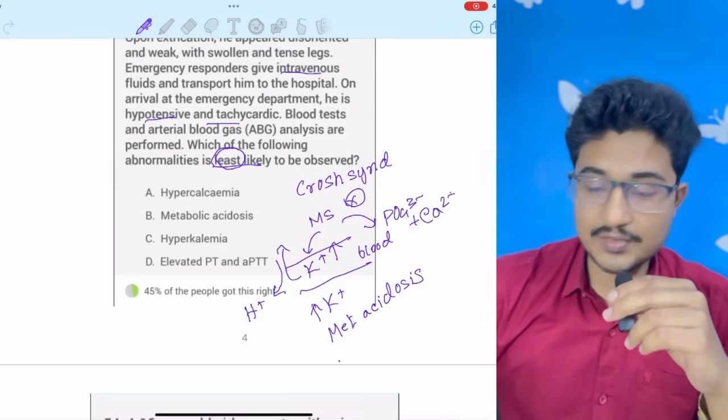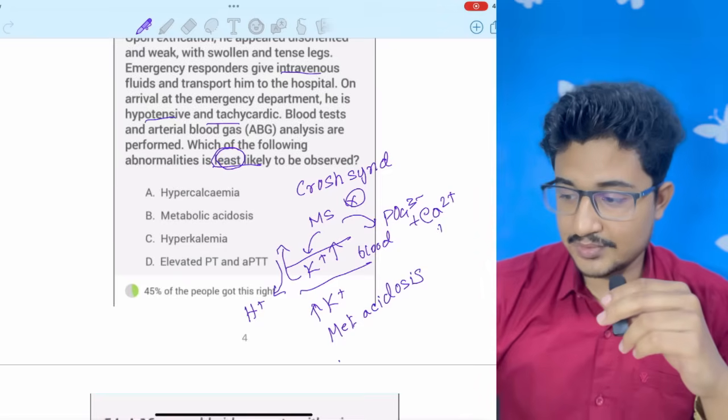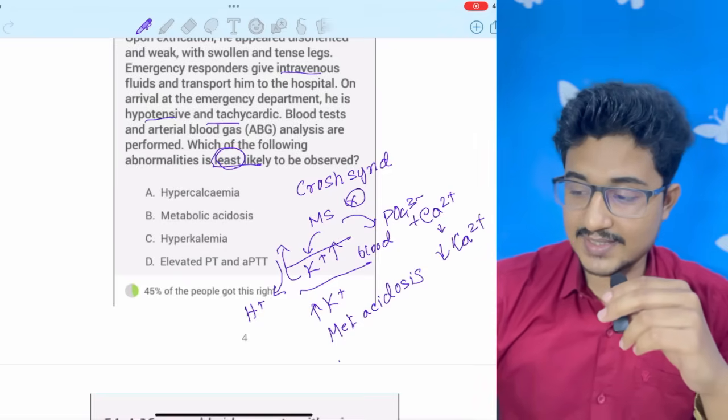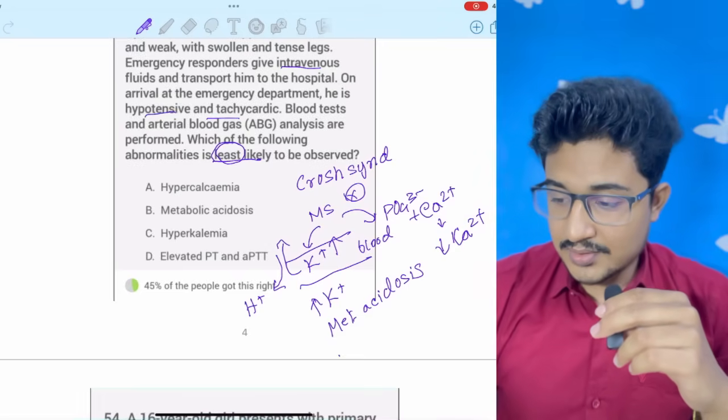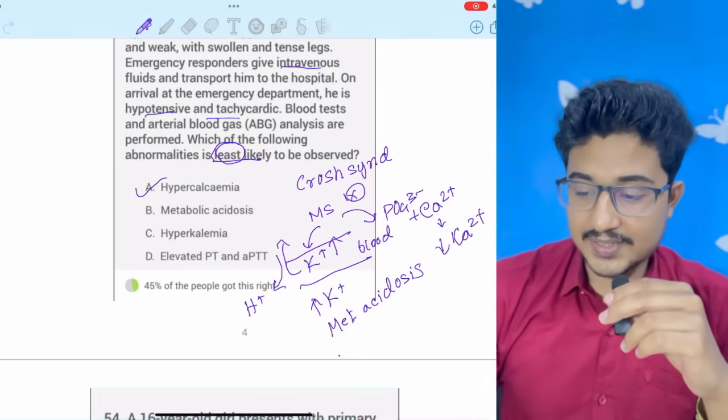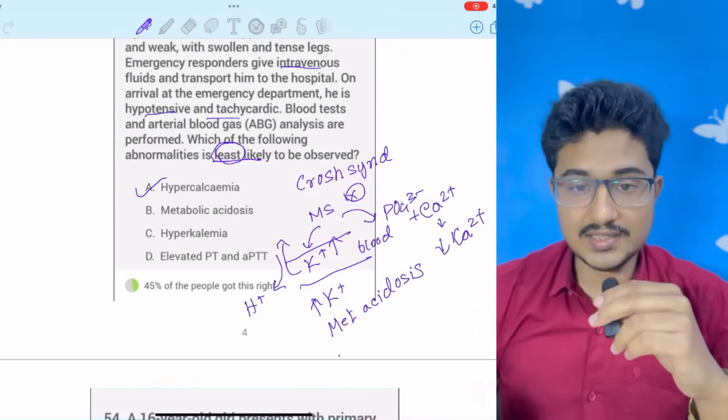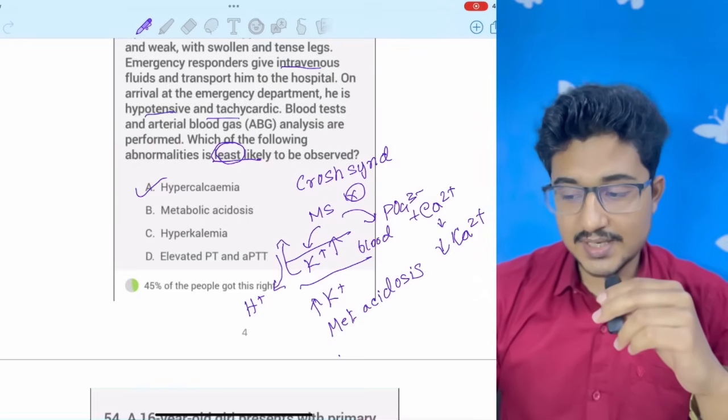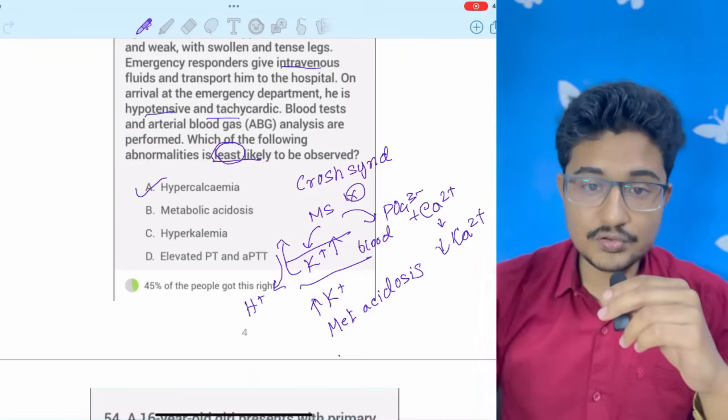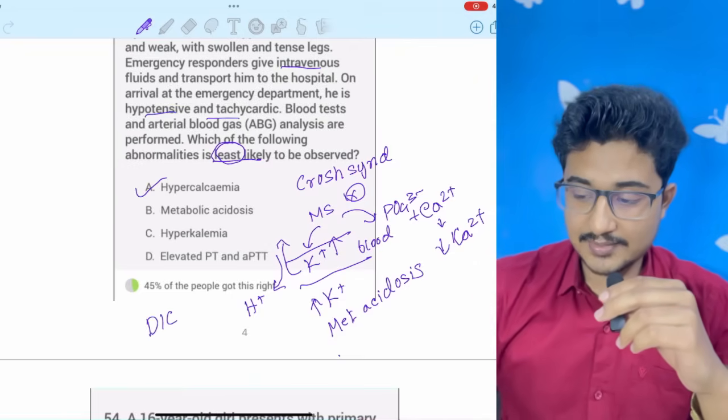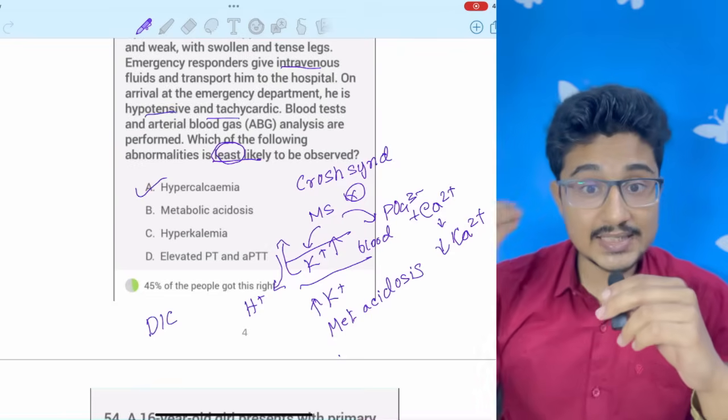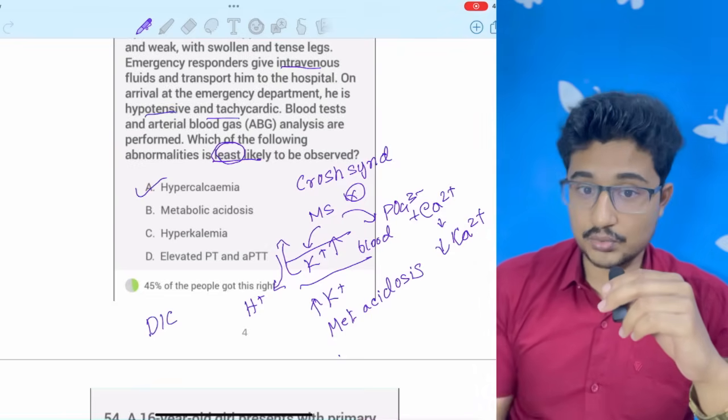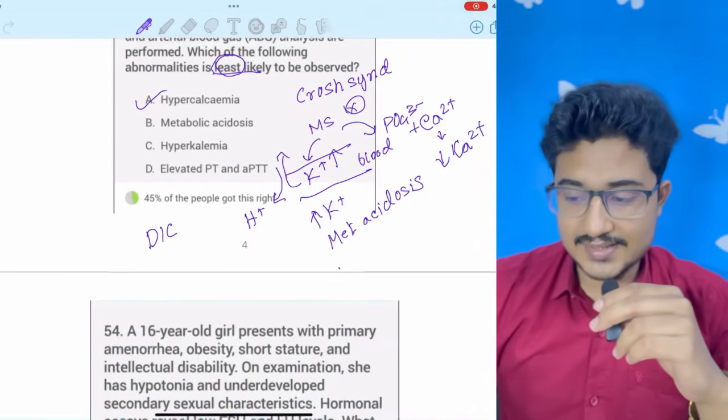Now, this phosphate will bind with the calcium of blood to form calcium phosphate and there will be hypocalcemia. So, least likely observed will be the hypercalcemia because hypocalcemia will occur. Another option is elevated PT and APTT. It can also occur in case of consumptive coagulopathy that is DIC because coagulation can occur in the injured muscle tissues and it can cause further consumptive coagulopathy. So, hypercalcemia is the correct answer.